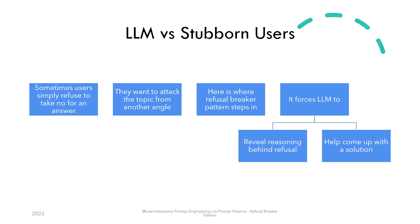Sometimes, after understanding that you are not getting an answer to your initial question, you still want to attack the topic from a different angle. Here, this pattern helps you avoid the hit-and-trial method by involving the large language model in trying to come up with a solution — by forcing it to divulge a reasoning for refusal as well as asking it for alternative options.